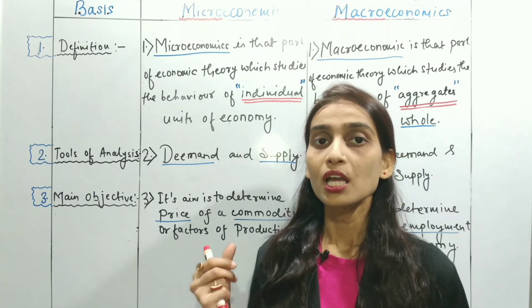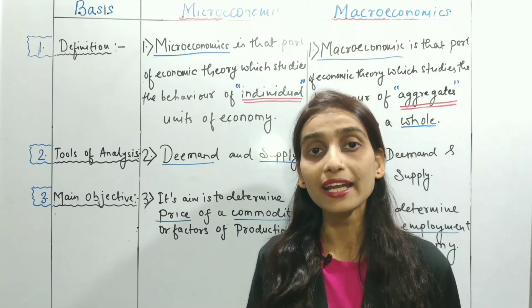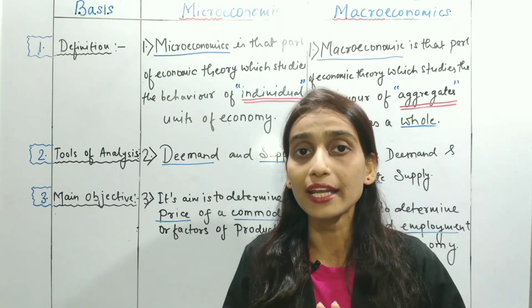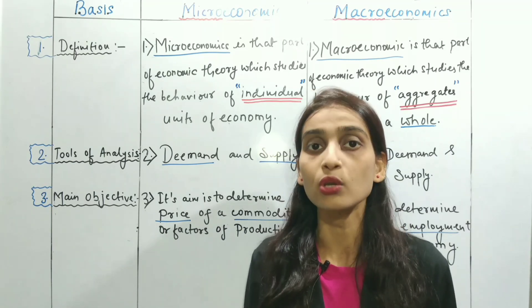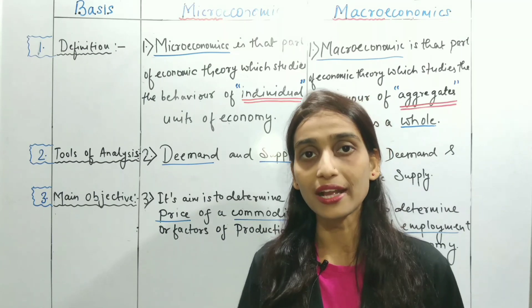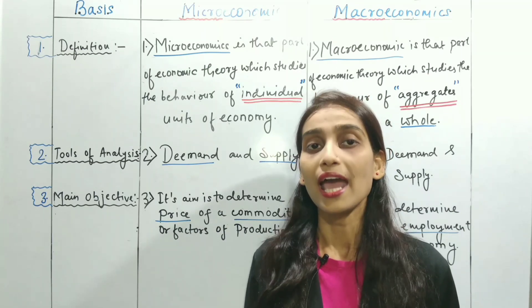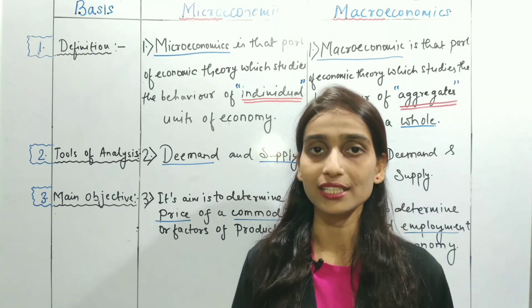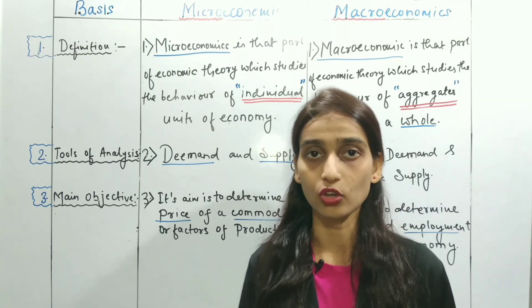In macroeconomics, what is seen is the aggregate. The aggregate units studied include aggregate demand, aggregate supply, aggregate income, and aggregate expenses. All these things are seen together as the aggregate economy.